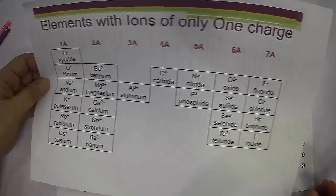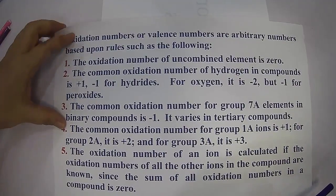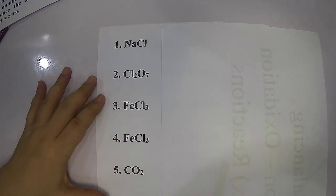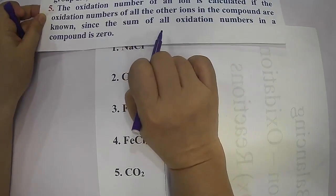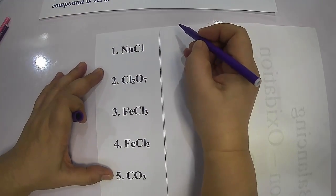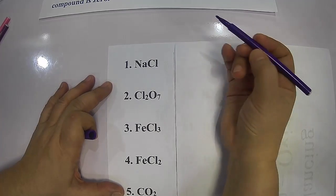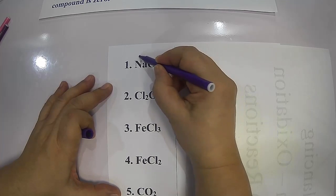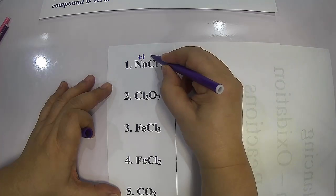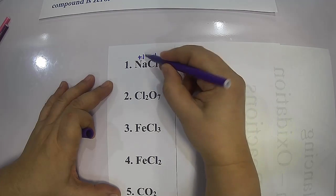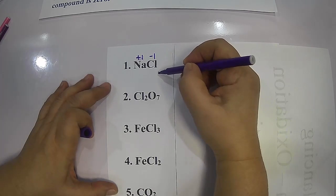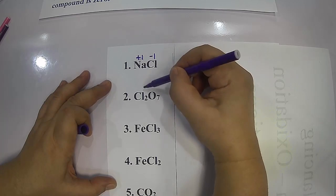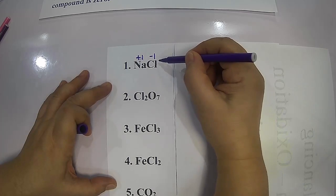To illustrate how these rules are applied, consider sodium chloride (NaCl). The sum of all oxidation numbers in a compound is zero. By the crisscross method: sodium, being in family 1A, is positive one; chlorine, in 7A, is negative one. Each has a subscript of one (understood). So the sum of oxidation numbers is positive one plus negative one, which equals zero.